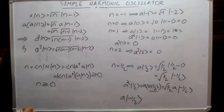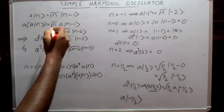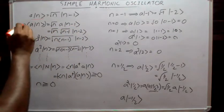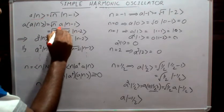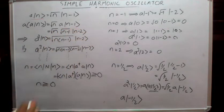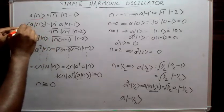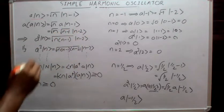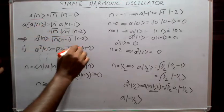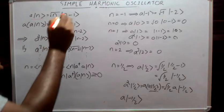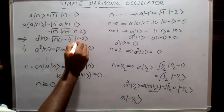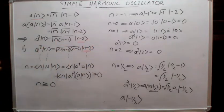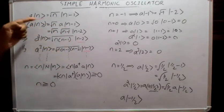This is the operation of the annihilation operator a on ket |n⟩, providing √n times ket |n−1⟩. If we keep on applying this annihilation operator, we get a²|n⟩ equal to √(n(n−1)) |n−2⟩, and a³|n⟩ gives √(n(n−1)(n−2)) |n−3⟩. That means we obtain eigenstates with smaller and smaller values of n, until the sequence terminates at some particular point.